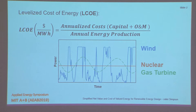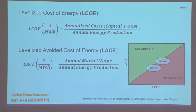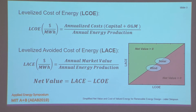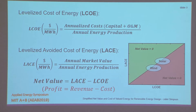I'm not the first person to say that this is an issue. The Energy Information Administration has proposed that we use something called LACE, or the Levelized Avoided Cost of Energy, instead. This looks at your annual market value of energy and then divides that by your annual energy production. They would have us look at this as a net value — LACE minus LCOE — or you can really think of that as profit, which is revenue minus cost.